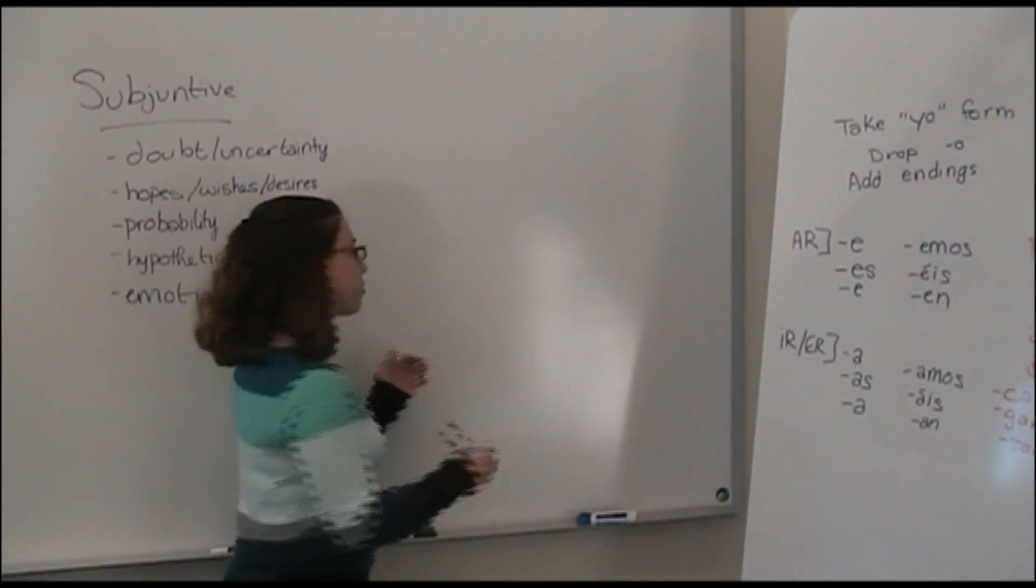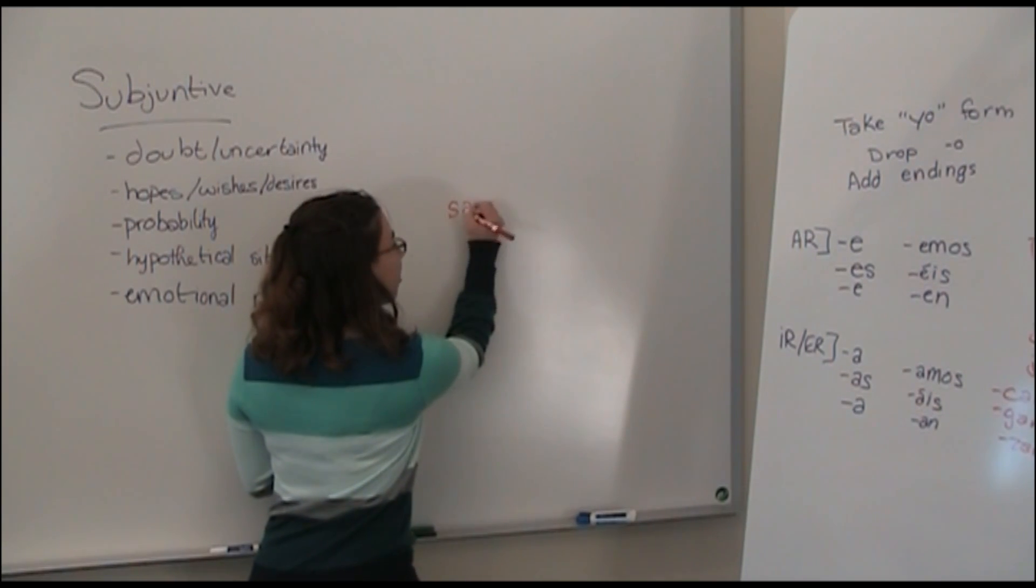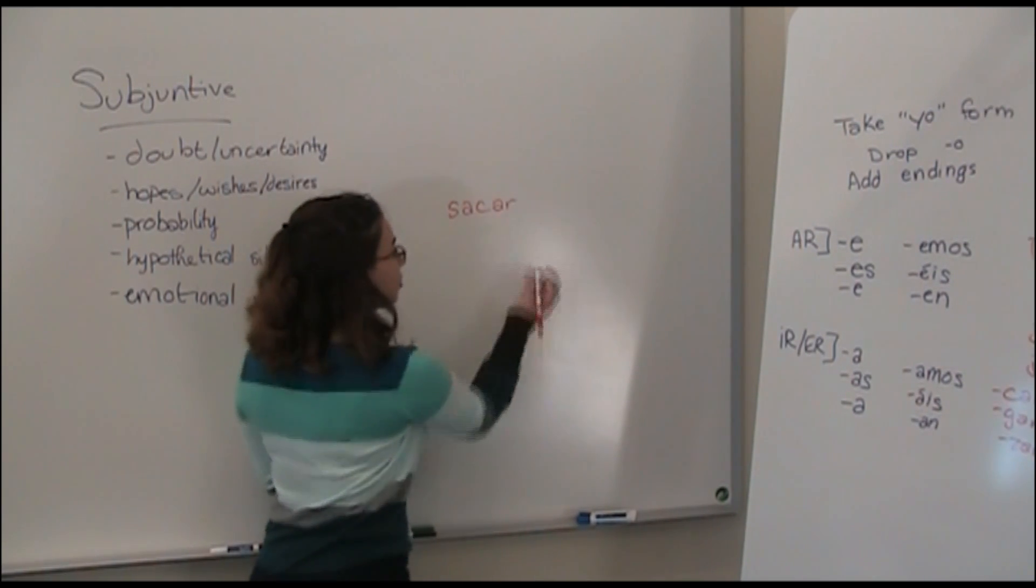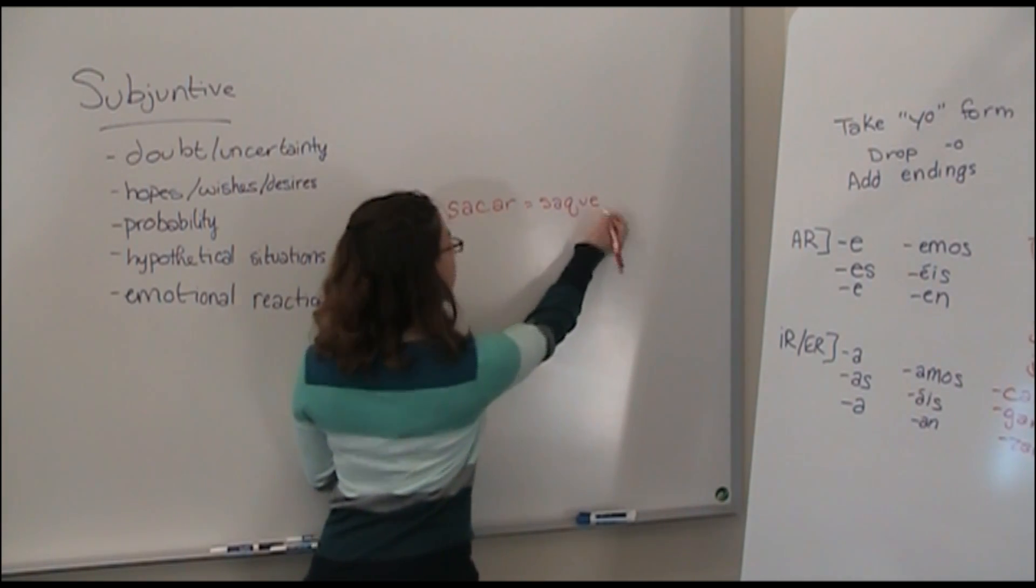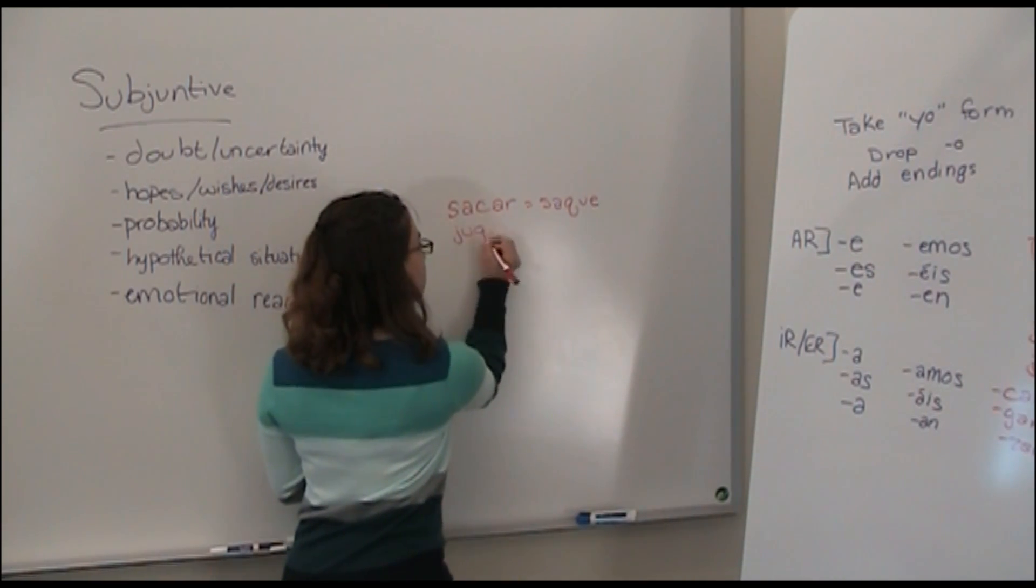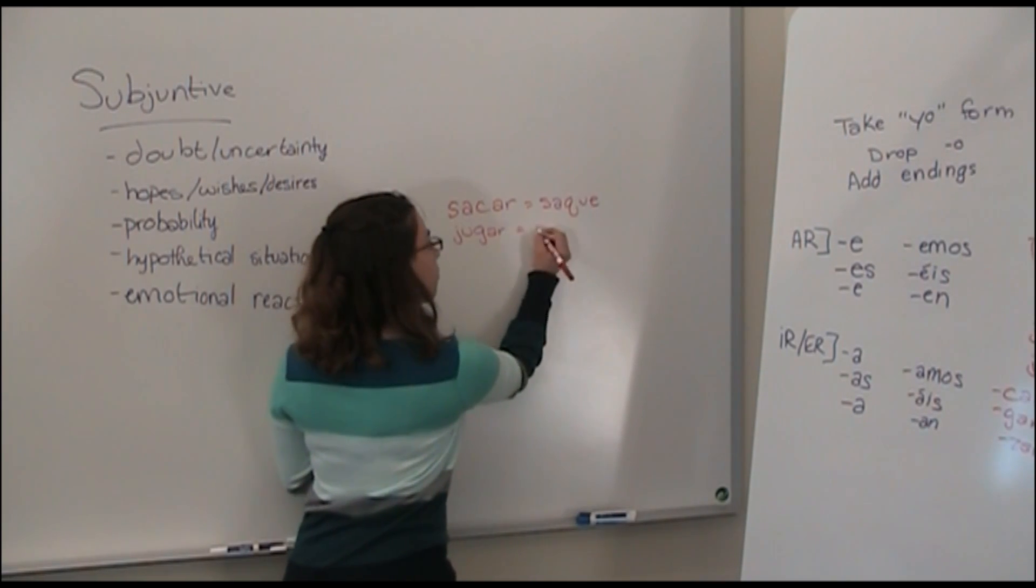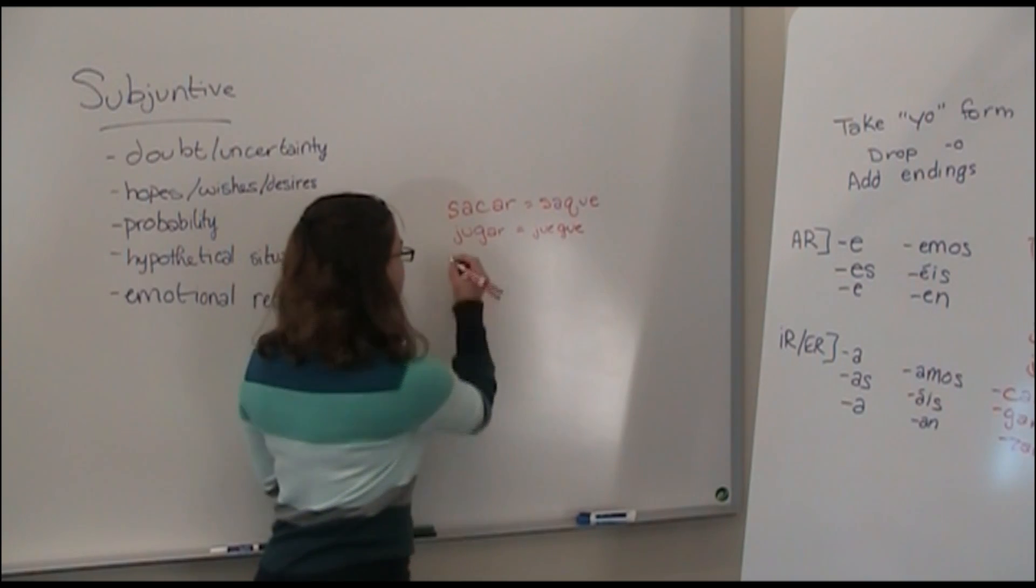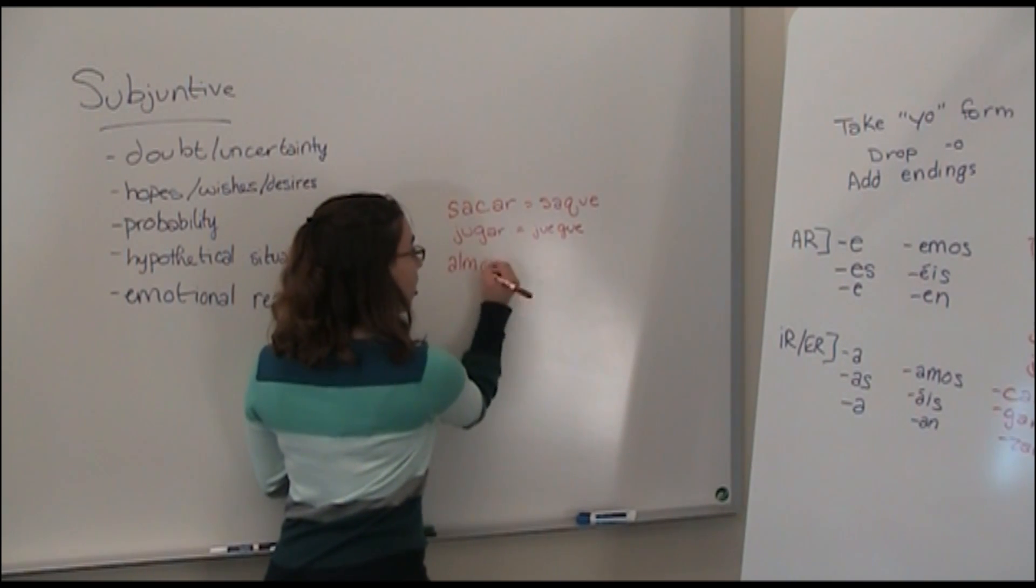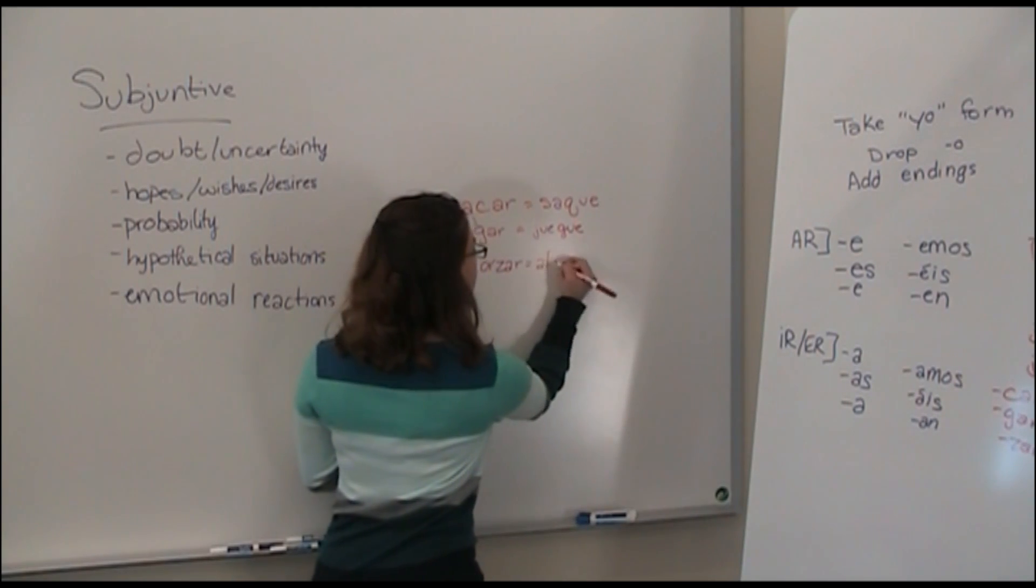Some examples of car-gar-zar verbs, you have like sacar, which will become saque. I've already put jugar there, but that's a gar verb, which becomes juegue. And then a zar verb, like almorzar, which becomes almuerce.